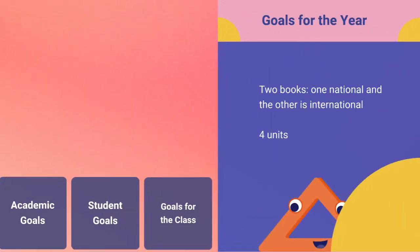For this year we will have two books: one national book and the other is an international book. We're going to cover four units. In the international book entitled Individuals and Societies, we're going to cover how are societies governed, what are natural hazards and how do societies respond to them, and how can new technologies affect our identities and relationships. And in the national book, we're going to cover geography in the Arab world.